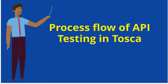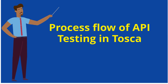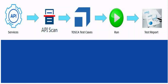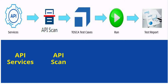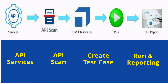The process flow overview of API testing in Tosca is explained through this diagram. API services are used to identify the API details and functional flow for automation. The API scan wizard is used to scan the API and create Tosca modules. The 'Create test case' step generates the test cases and performs cleanup with parameterization. 'Run' is to execute the test cases and share the reports to stakeholders.